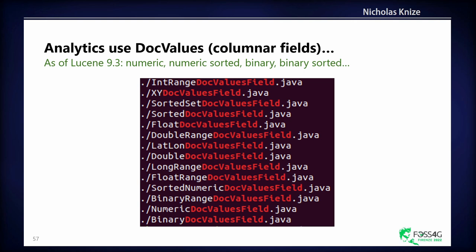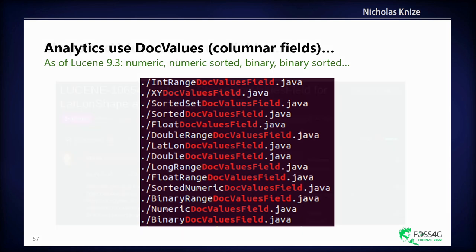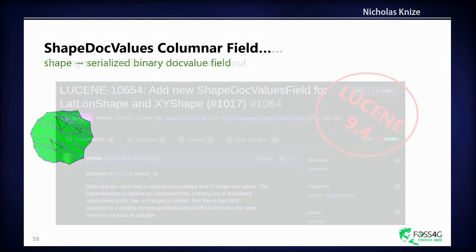Aggregations is the analytics portion of this. In Lucene we use a different data structure called doc values, which is columnar stride, basically. As of Lucene 9.3, these are the numeric doc value formats. Until 9.4, we didn't have one for shapes, so you couldn't run any aggregations or analytics in Solr at all without this format. Lucene 9.4 introduced this. This is relatively hot off the press.